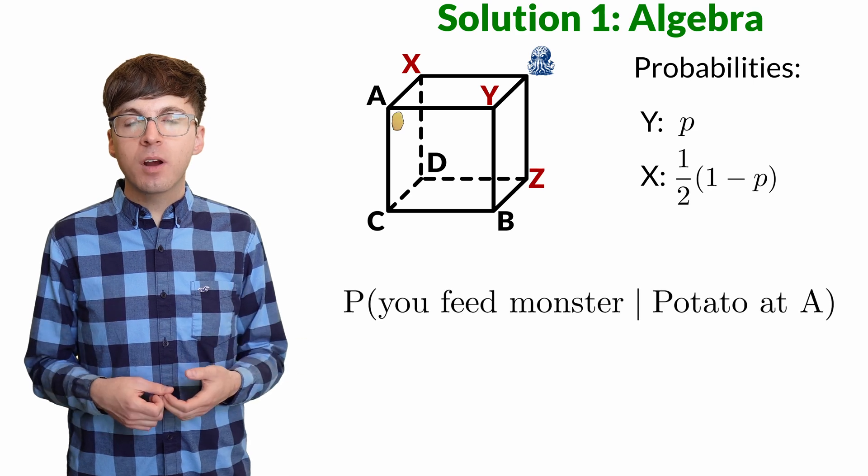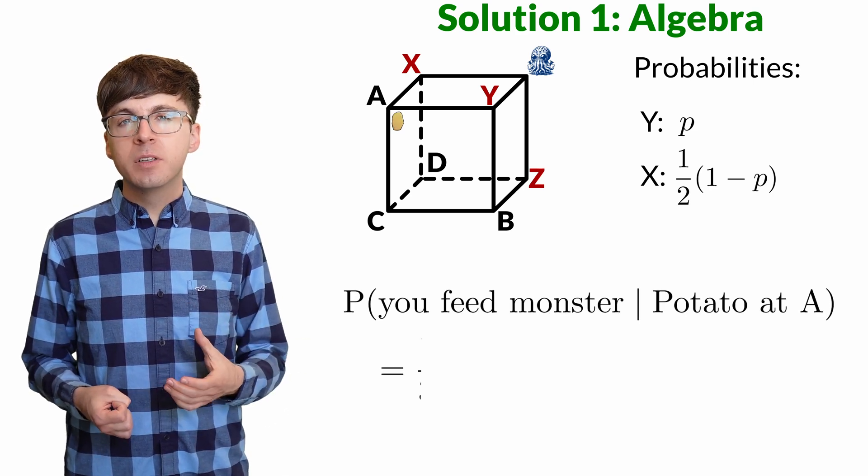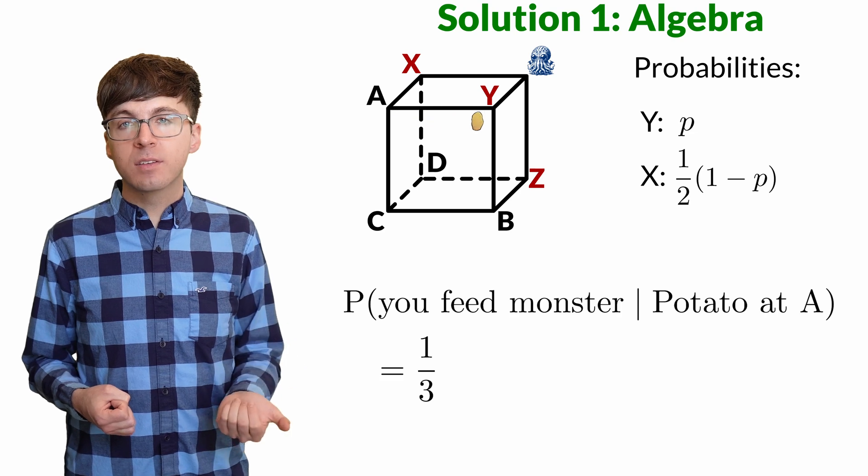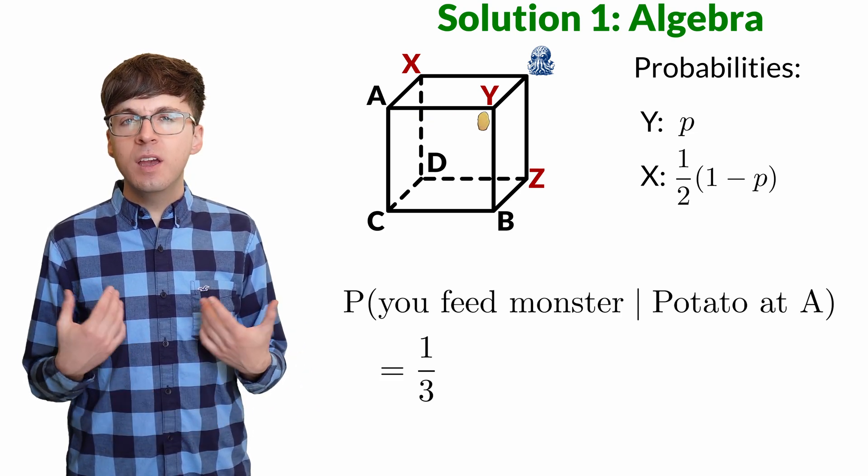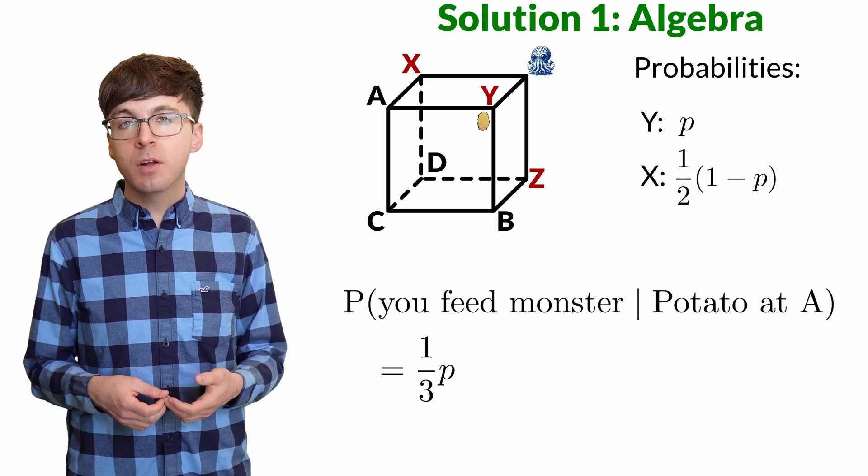Now we can repeat the process starting from a. There's a one-third probability the potato gets thrown back to us. Then we're in the same situation as the beginning of the game, so we have probability p of feeding the monster from that point.